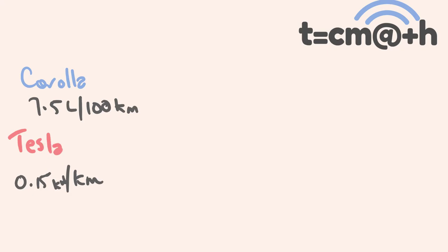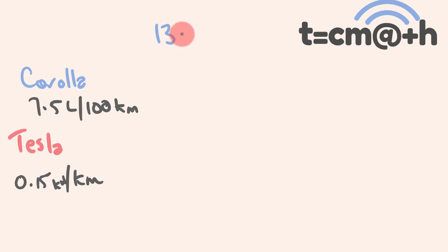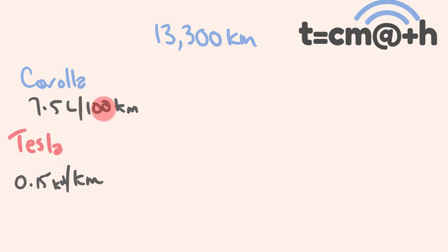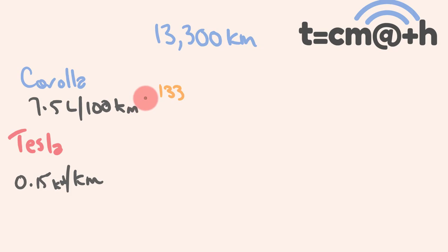Now we're going to do a similar thing: work out for a given distance how much energy we're using, then work out the actual cost comparison. The average person in Australia drives 13,300 kilometres per year — we don't drive quite as much as they do in the US. For the Corolla, for every 100 kilometres we're using 7.5 litres. How many lots of 100 are in 13,300? We divide by 100 and get 133 lots of 100.